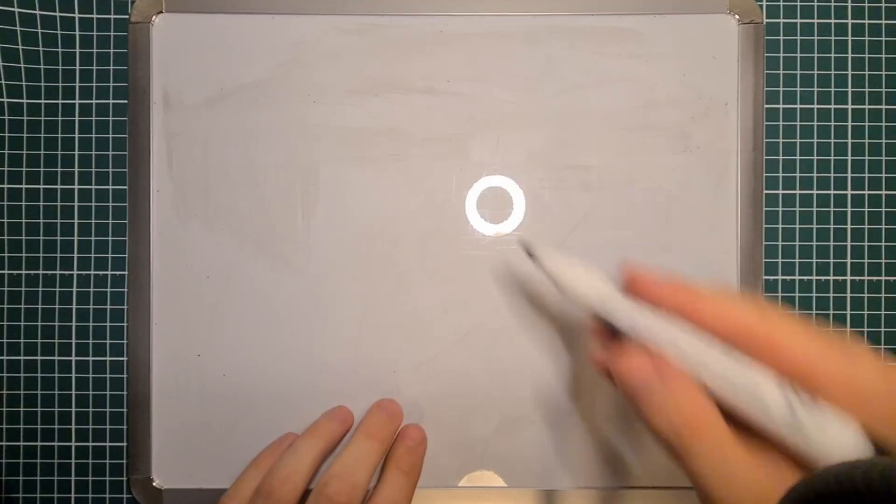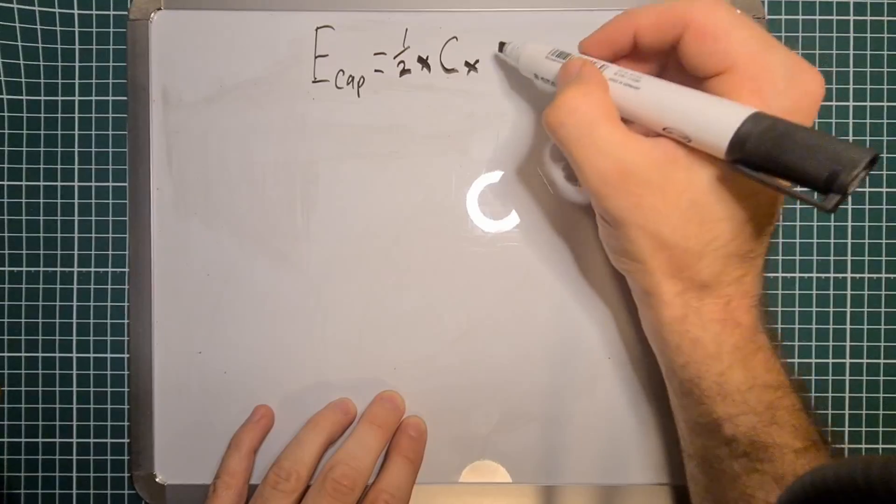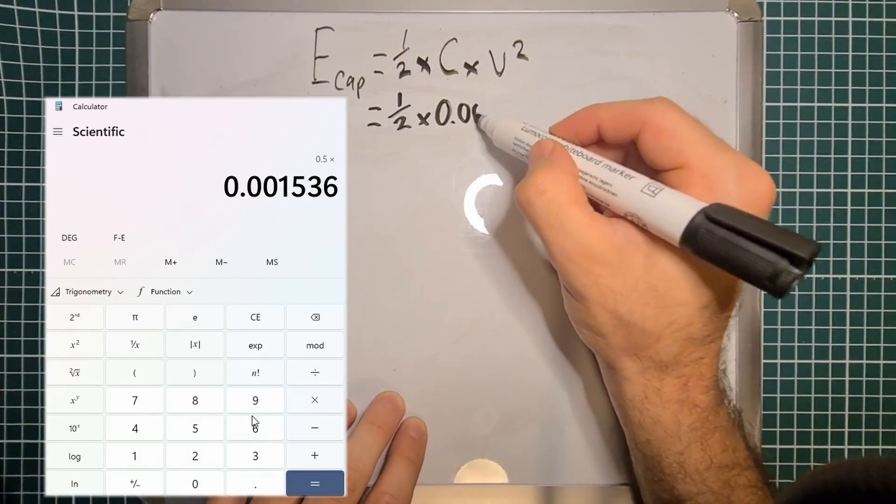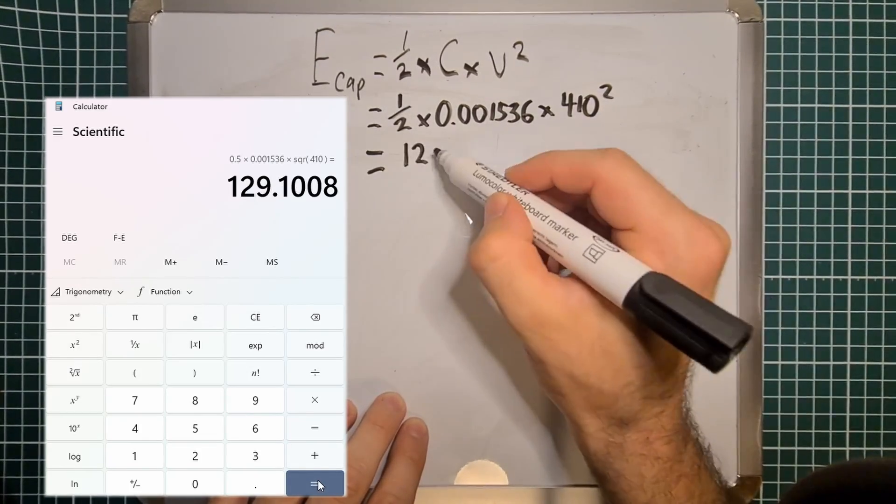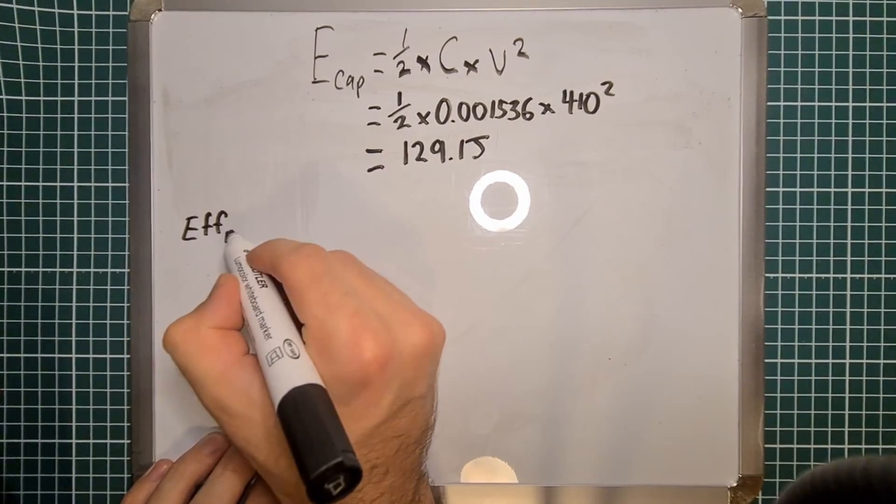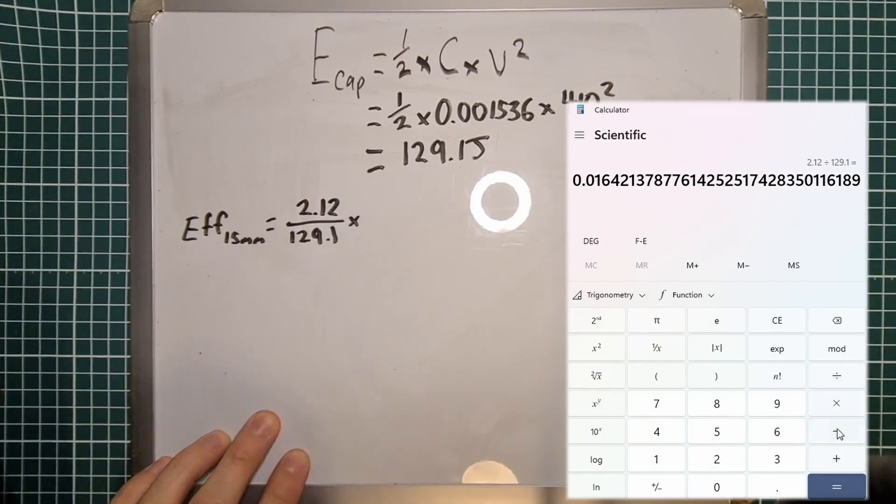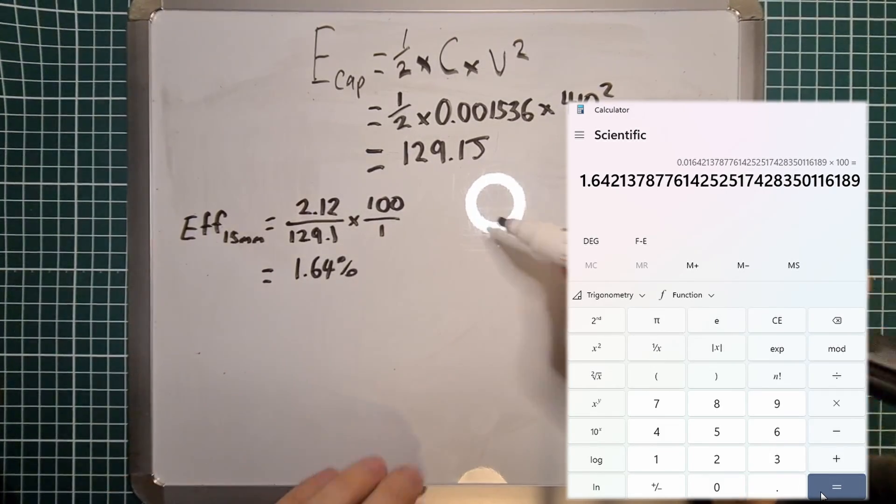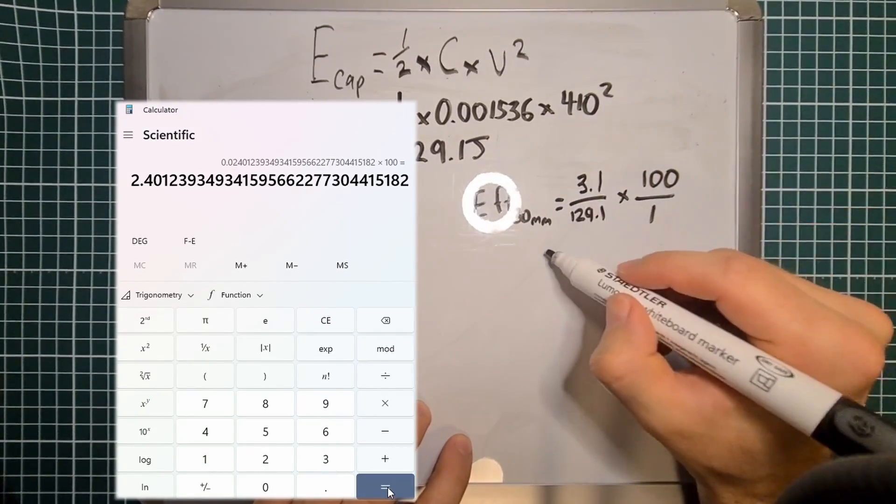The efficiency is calculated by first working out the initial energy stored in the capacitor bank by using the equation: energy in joules equals half times the capacitance in farads times the voltage squared. We then minus the energy remaining in the capacitor bank after the shot has been fired to get the energy used. Then we divide the projectile's kinetic energy by the energy used and multiply it by 100. When calculated, we end up with efficiency of 1.64% for the 15 millimeter and 2.4% for the 30 millimeter.